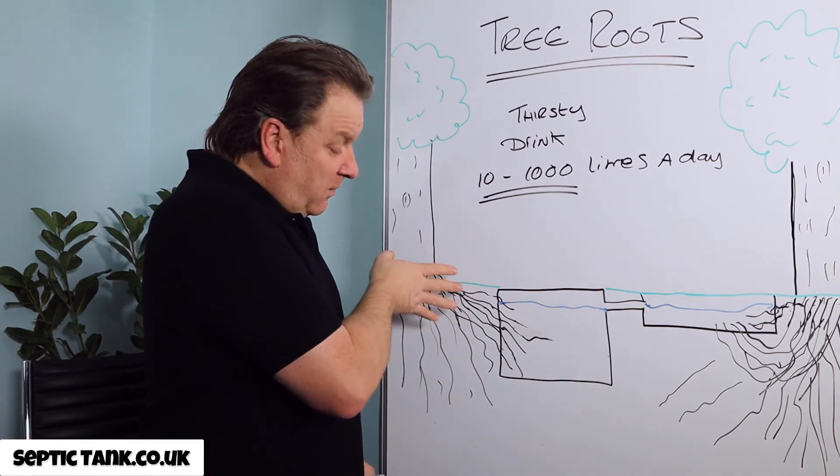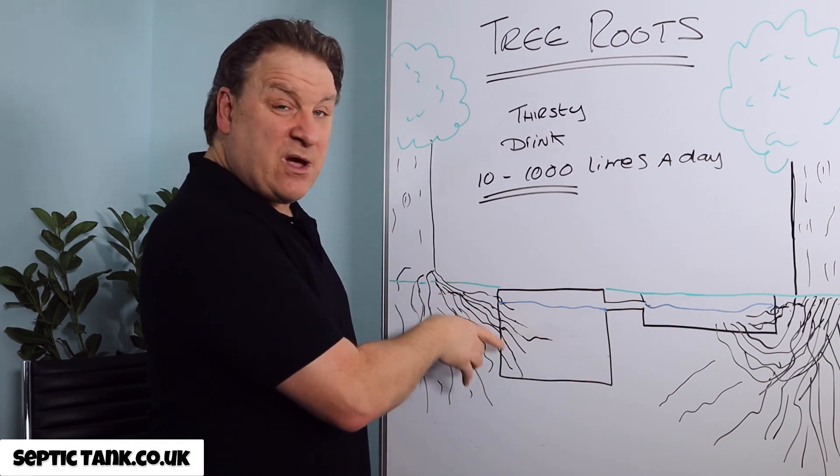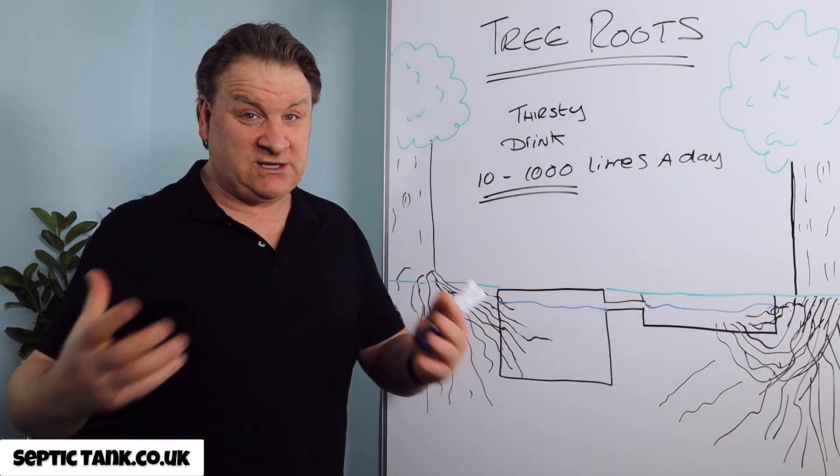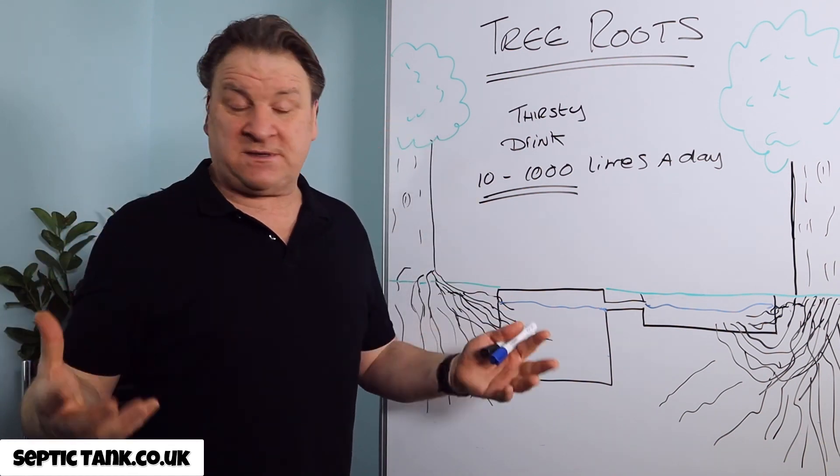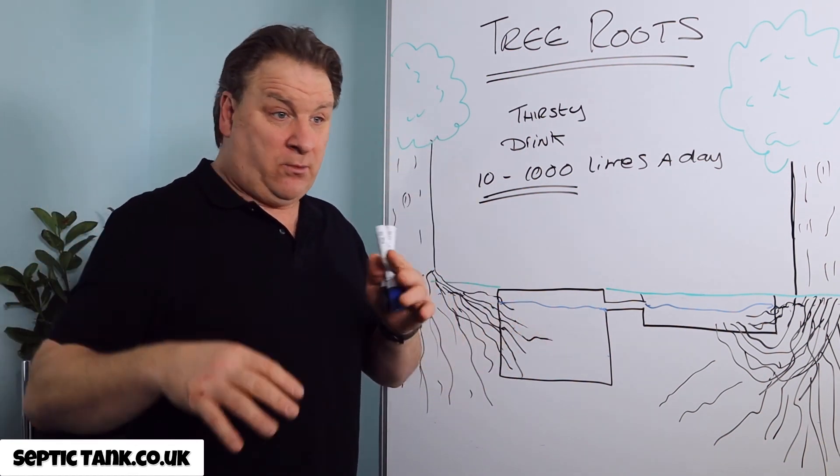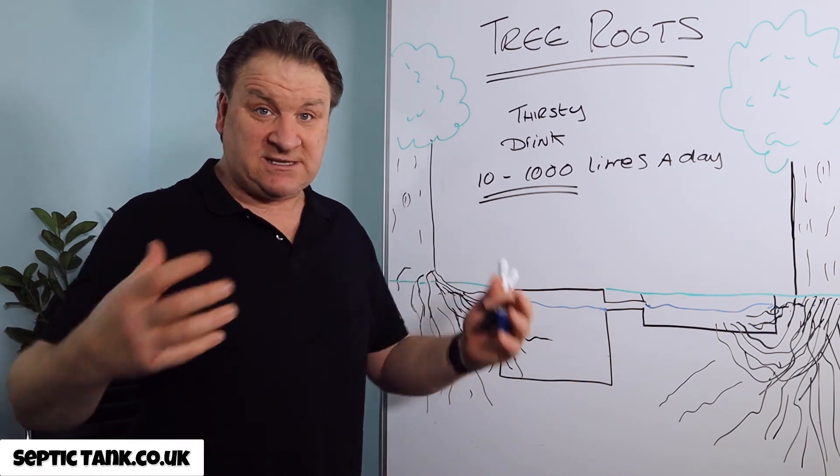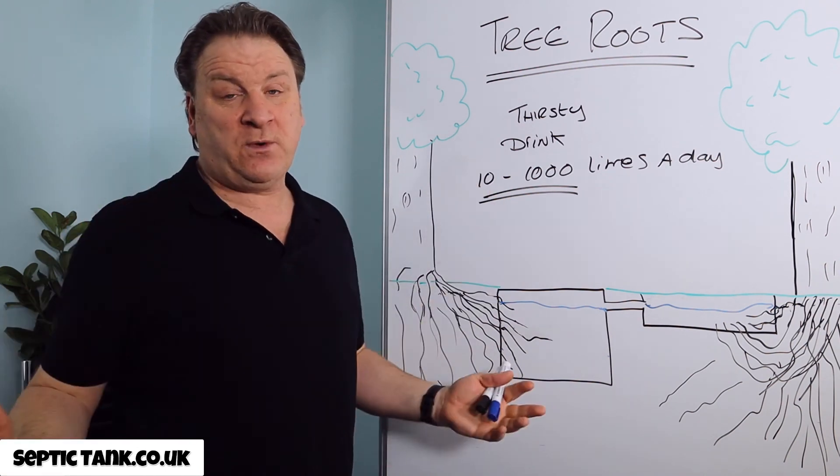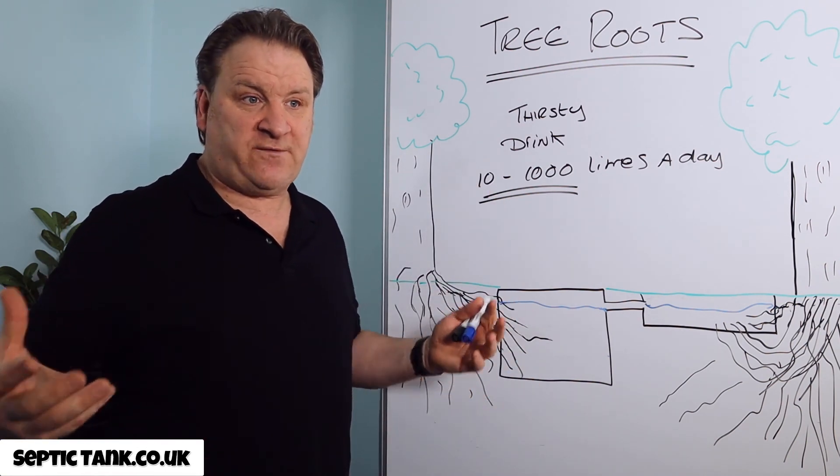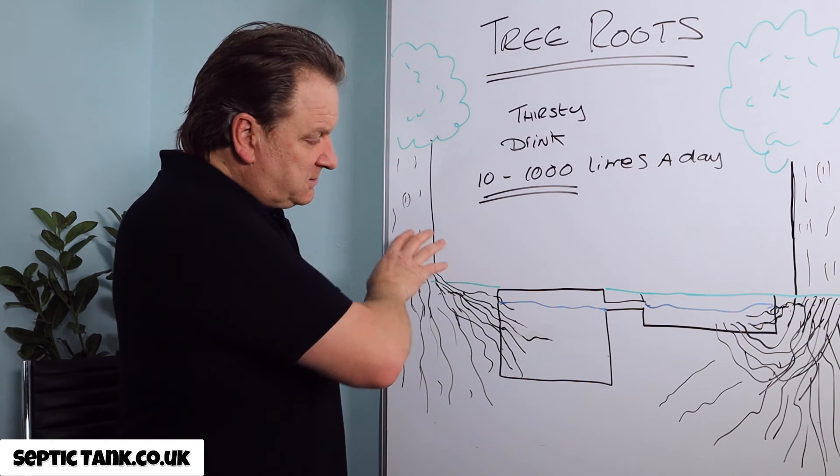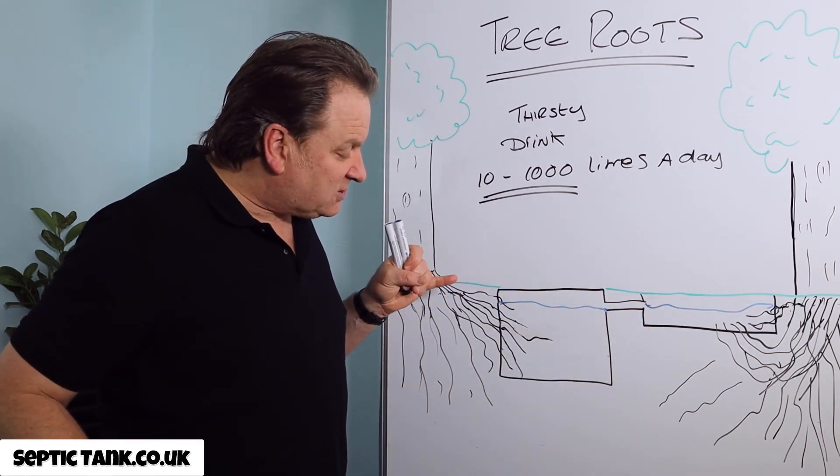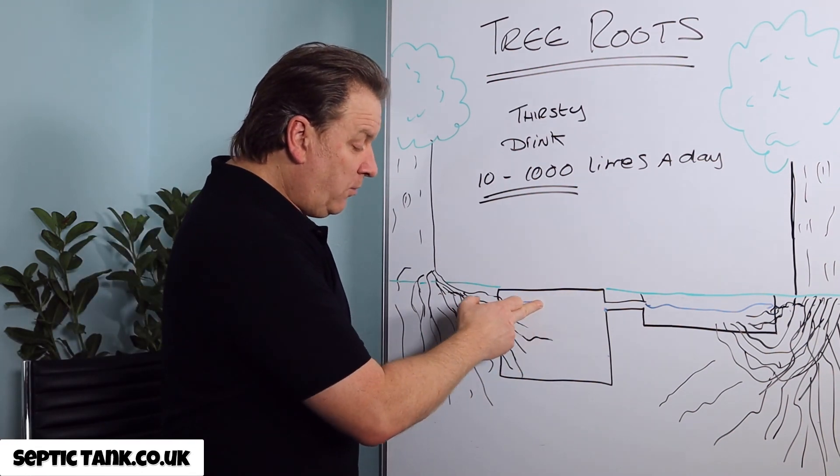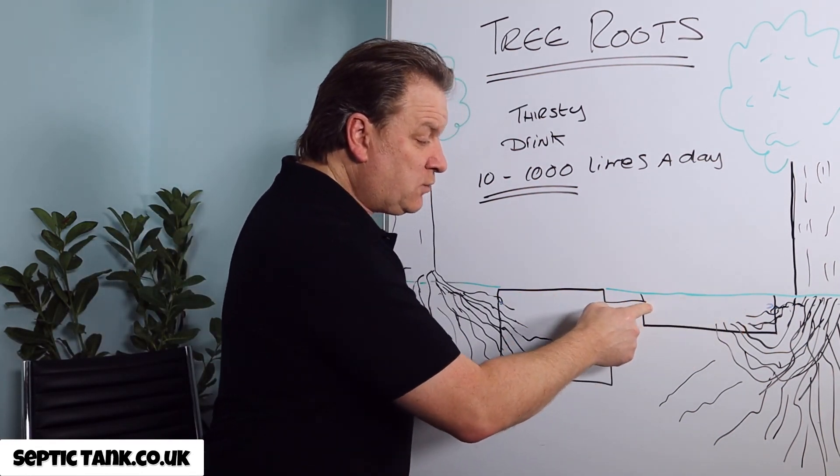So the whole reason the tree roots have made their way into your septic tank and soak away is because they can smell water. It's true. In the desert, scientists don't really know why, but they can smell where the water and the oasis are. That's why you get lots of palm trees around oases. Obviously the water fertilizes the seeds in the first place, but they can smell water. So when they actually reach their destination, because they're thirsty, they drink all the liquid inside your septic tank and soak away.